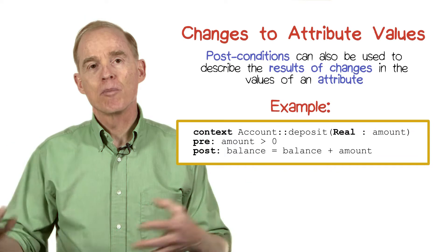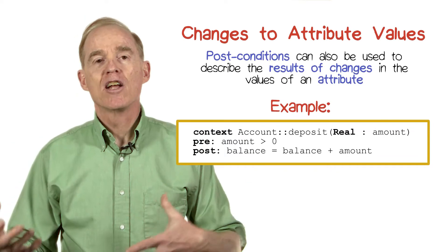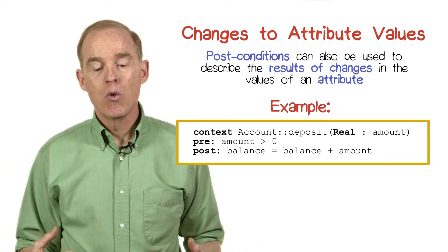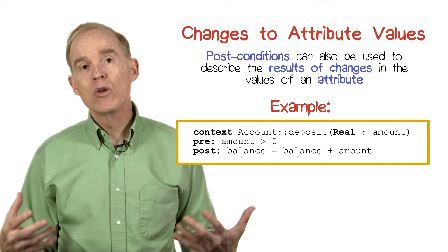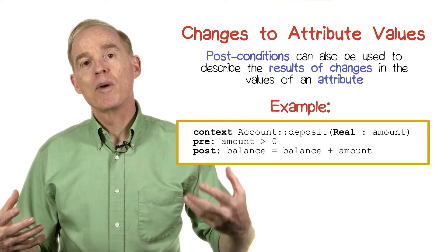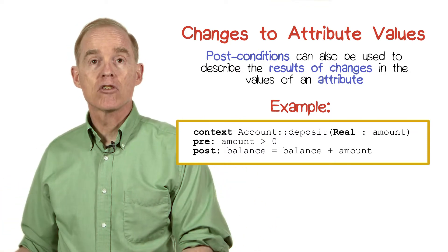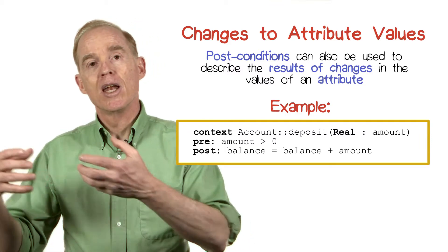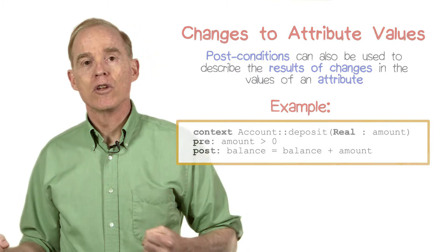Let's consider the example of a bank account that has an attribute which is the current balance, and has operations for deposits and withdrawals. We might wish to guarantee that the current balance reflects any deposits that are made and any withdrawals that are taken out. How might we express such a constraint?